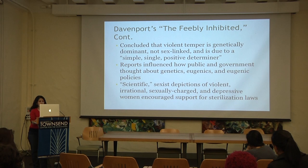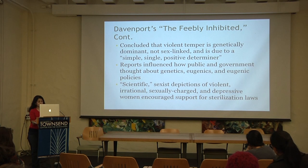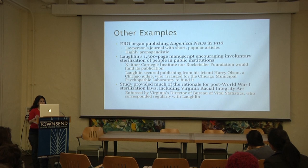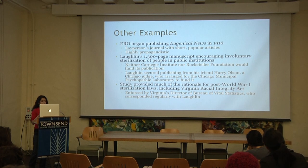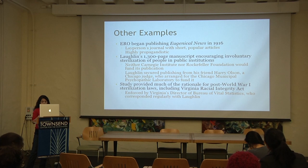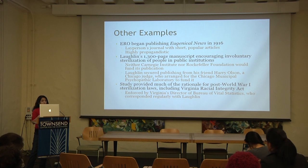These reports helped influence the tenor of public and government thinking about eugenics and policies such as sterilization laws. Supposedly scientific — and certainly sexist — depictions of violent, irrational, and depressive women built support for sterilization laws. Some other examples: the ERO began publishing the Eugenical News in 1916, a layperson's journal that was highly propagandic. Laughlin also wrote a 1,300-page study about eugenic sterilization, advocating strongly for sterilization laws that would allow involuntary sterilization of people in public institutions. Neither the Carnegie Institute nor the Rockefeller Foundation wanted to pay to publish such a controversial study, so Laughlin used connections with a judge to secure funding.